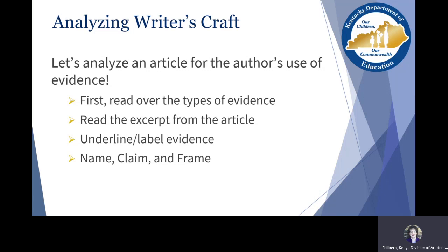We're going to underline or highlight from the article first — find the evidence, say 'yes, this is evidence.' Then we'll go back to our evidence list and think about those types of evidence, so we're not only picking it out from the text but labeling it. Then we'll go through a charting procedure: naming it, pulling that quote from the text, claiming it, and framing it — thinking about why the author uses that particular type of evidence and what impact it has on the reader.